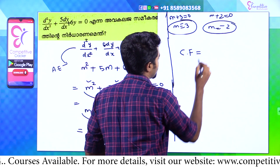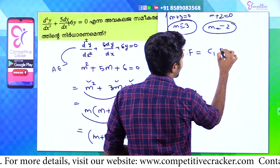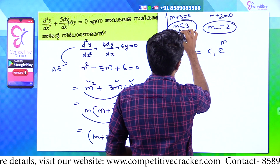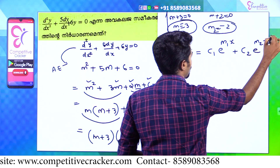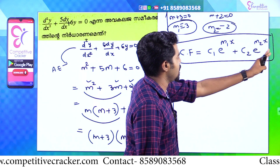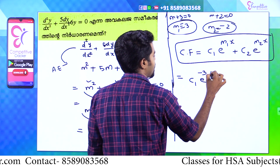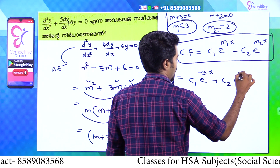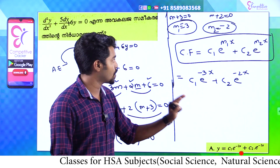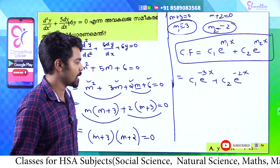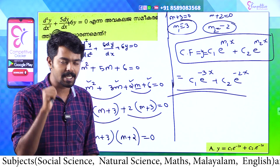We will put the value of CF — that is the complementary function — in the format: y equal to c₁ e raised to m₁x plus c₂ e raised to m₂x. So with m₁ equal to minus 2 and m₂ equal to minus 3, the answer is y equals c₁ e raised to minus 2x plus c₂ e raised to minus 3x. That is Option A. Simple. That's how we get the exam clear.